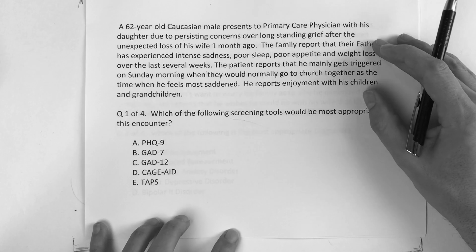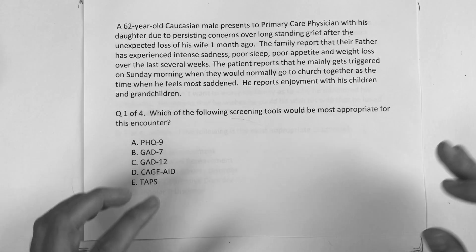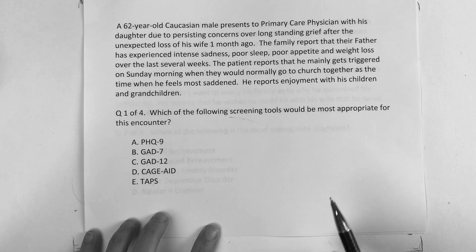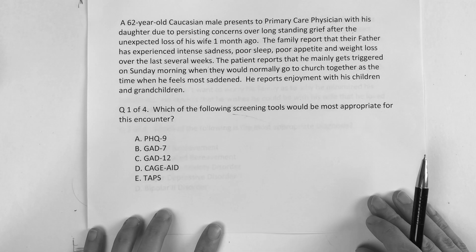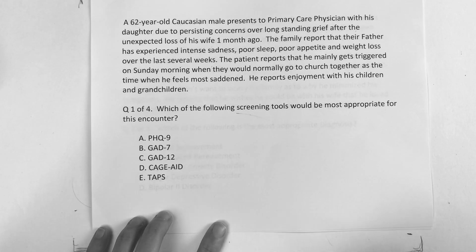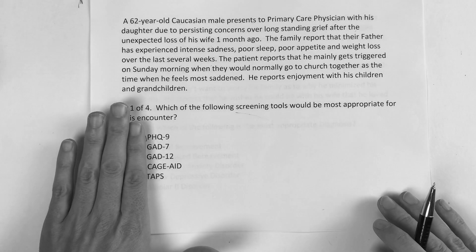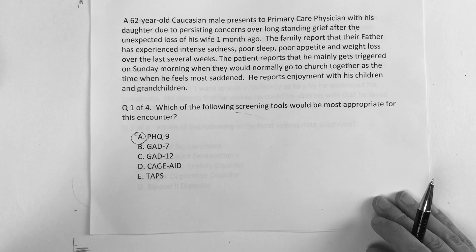So really the question on this one is: which of the following screening tools? This is how we're going to take a patient from A to Z. The USMLE looks at you as though you're an emergency room doctor or a primary care physician. So which of these would you use? The correct answer — I should have mentioned them out loud first, just in case you're only listening to the audio. Is it A, PHQ-9? Is it B, GAD-7? Is it C, GAD-12? Is it D, CAGE-8? Or is it E, the TAPS?